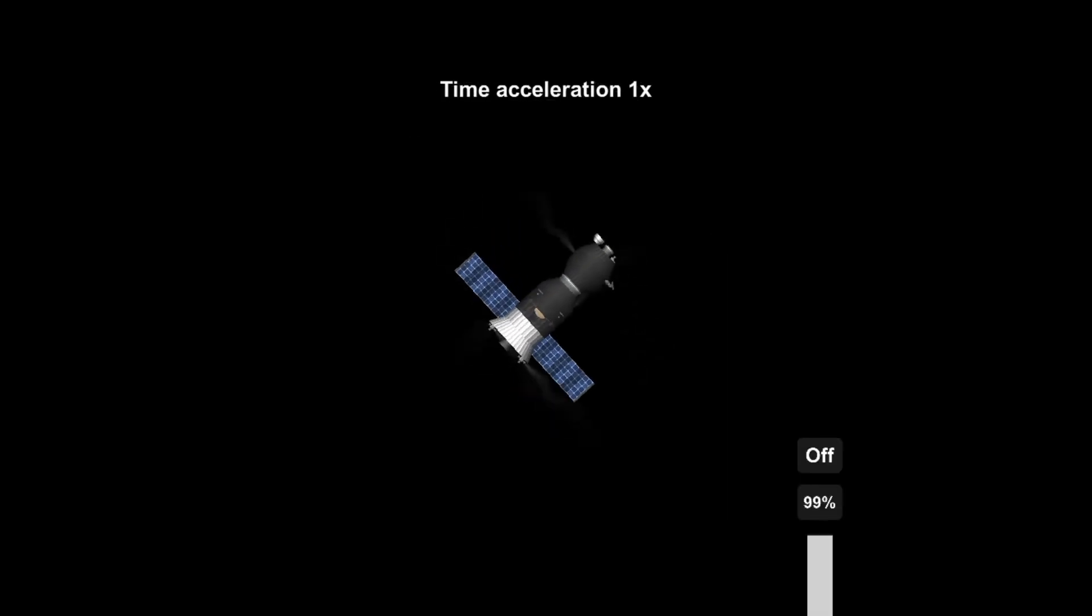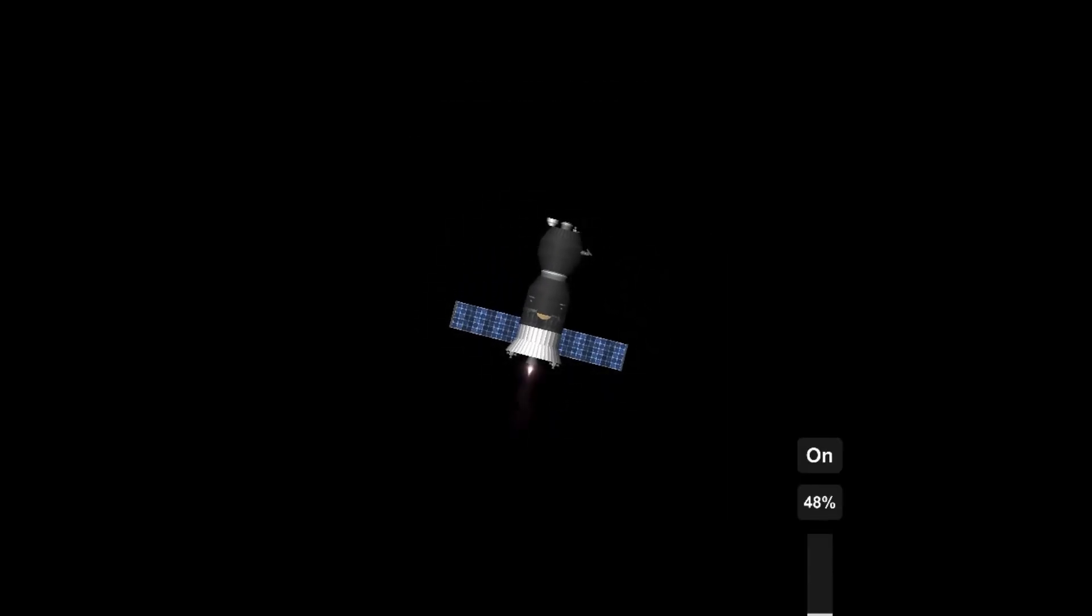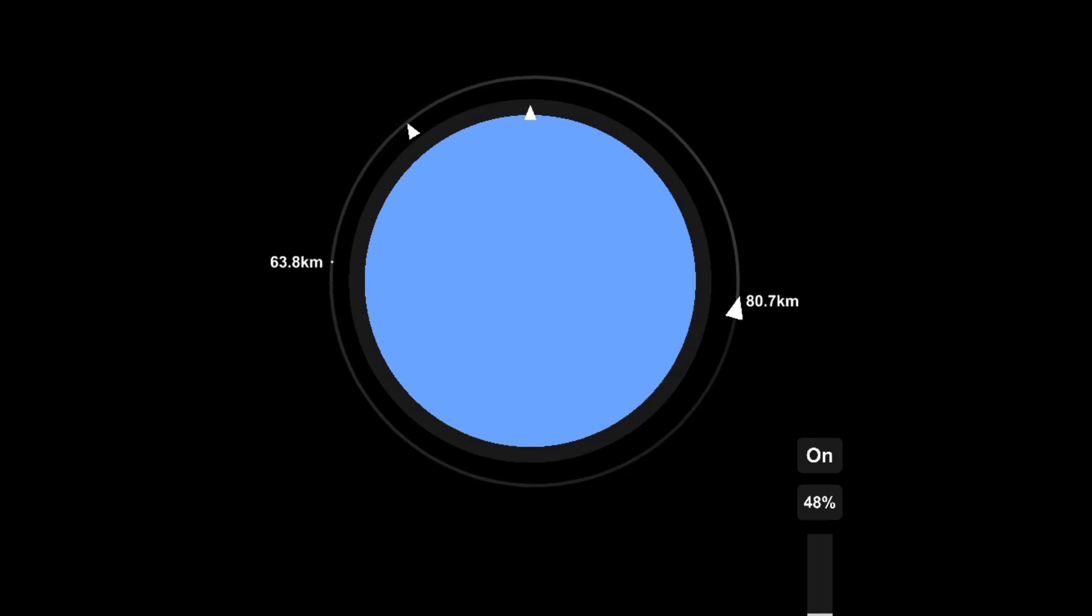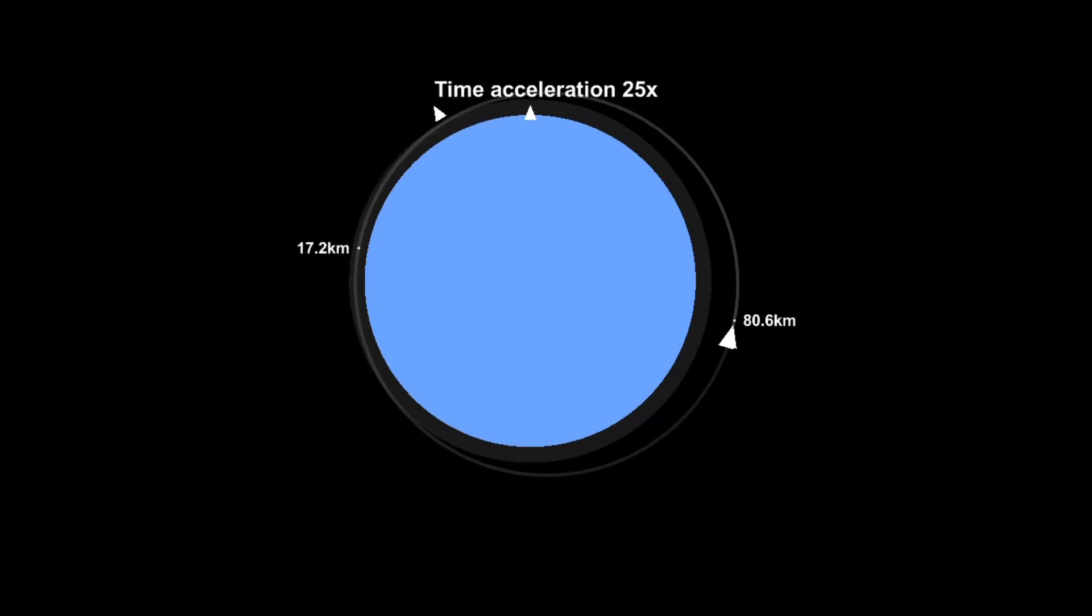We have now detached from the Salyut station and we will deorbit over the Atlantic—actually no, over the Pacific Ocean. There it goes. Making sure my periapsis makes it into the atmosphere and also making sure it goes low enough because I don't want to skip off the atmosphere and go off into space again.